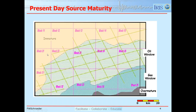Regarding present-day source maturity: the peach color is immature — nothing has started generating from the primary source rocks. The green area is primarily in the oil window, generating mostly oil with a minor amount of gas. In the region with blue stippling, it's hotter and deeper — that's the gas-only window where all the oil has already been generated. In the far southeast, the gray area is where the source would be over-mature and all hydrocarbons would have been generated.